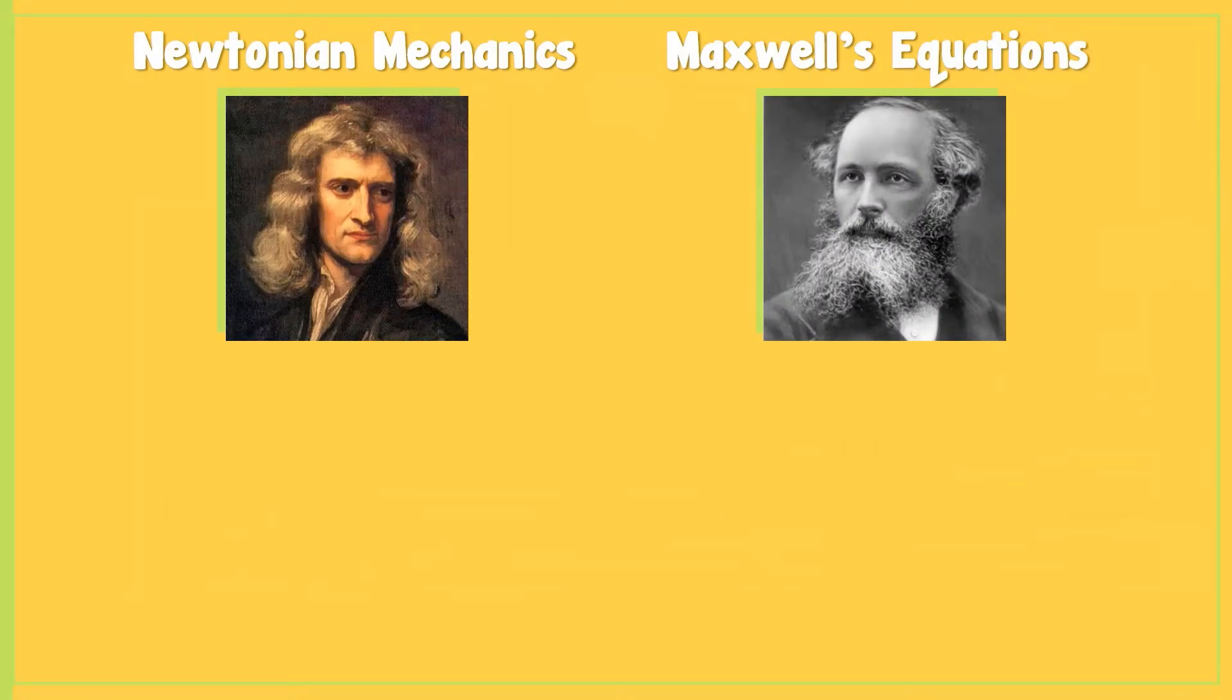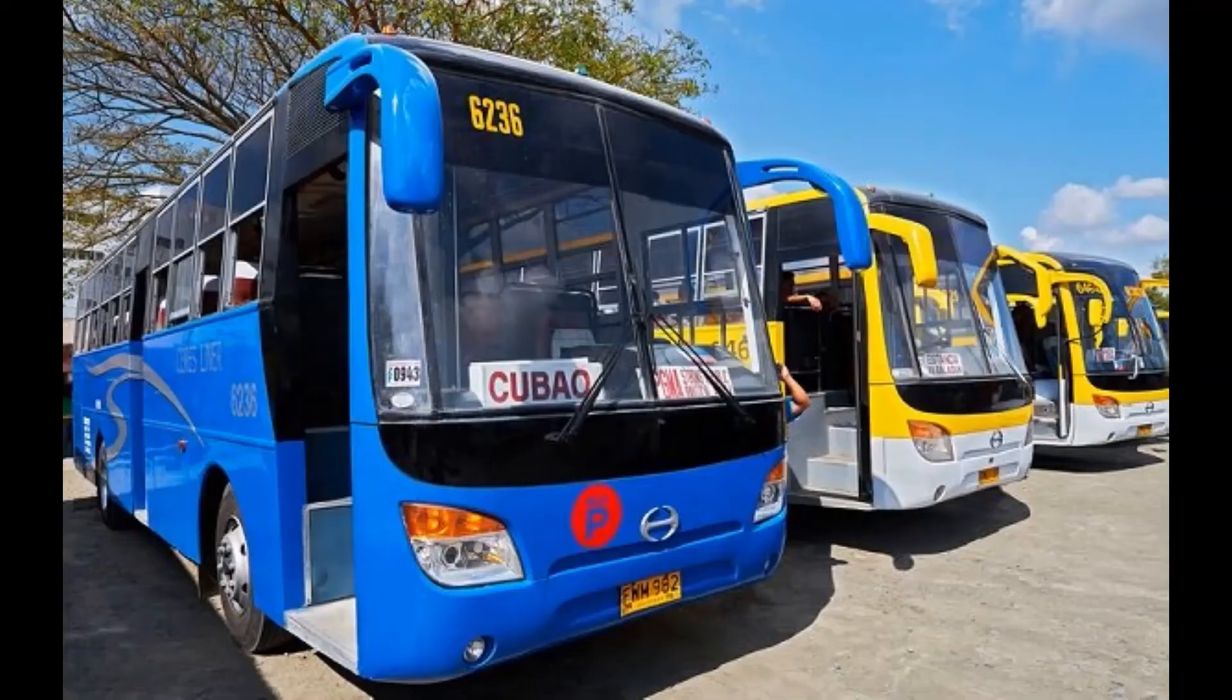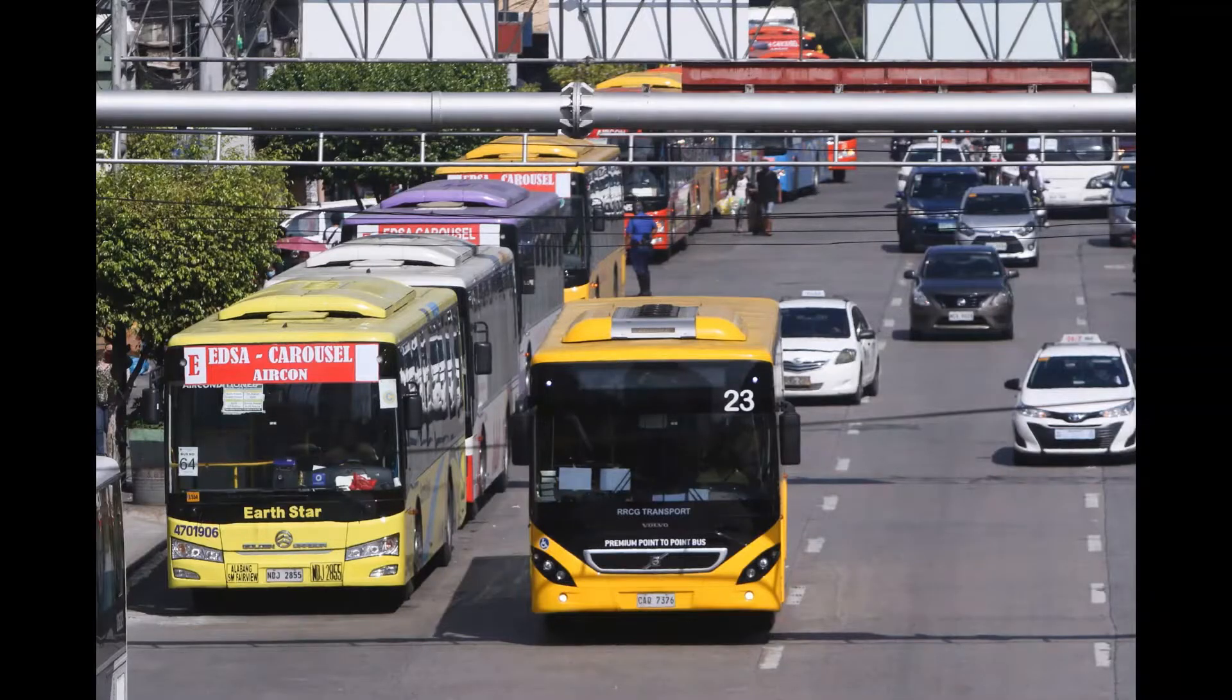Newtonian mechanics is the application of Newton's laws of motion. It's stated that all inertial frames are retained and space and time are absolute, meaning that if you do a physical experiment in a bus at rest or in a moving bus in EDSA, the results are always the same.